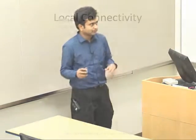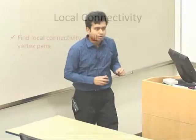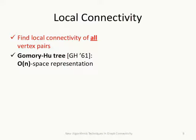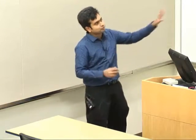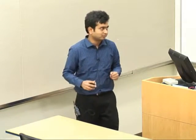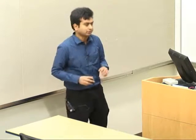For local connectivity, the goal is to find the connectivity of all vertex pairs. This question was asked as early as 1961, when Gomory and Hu came up with an elegant data structure showing that all n-squared local connectivities can be represented in linear space — O(n) space. The focus shifts to whether we can construct this linear-size representation. Note: this is for undirected graphs only.